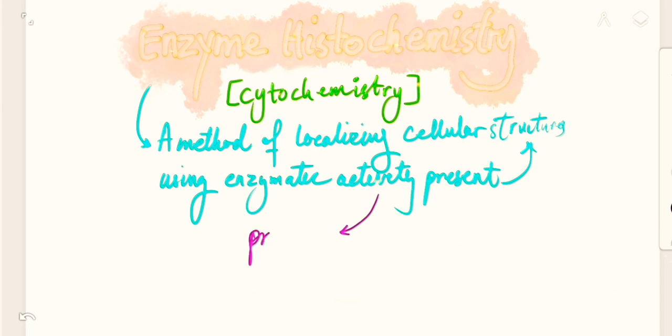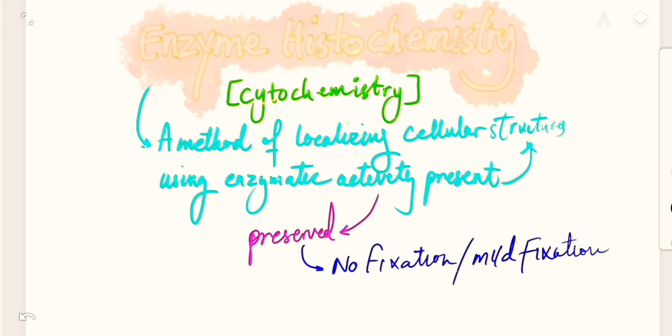For the enzymatic activities to be preserved we need to make sure that we don't do any fixation or use any fixatives in the preparation stages. And if we have to do it there need to be used mild fixatives because heat and organic solvents do no good with the enzymatic activities. Therefore a cryostat is used to preserve these activities inside the cell.